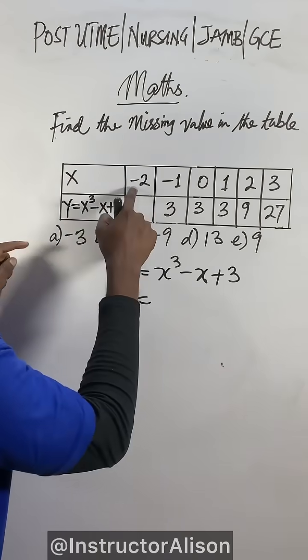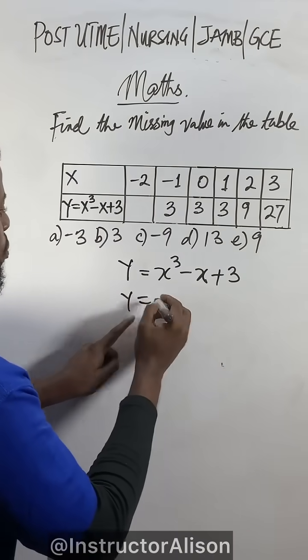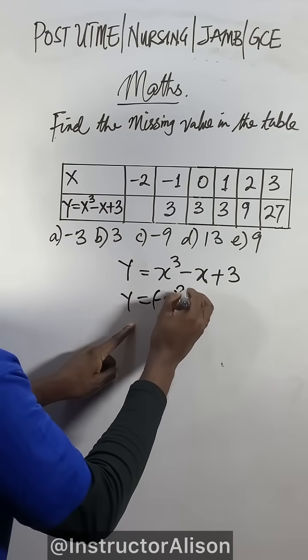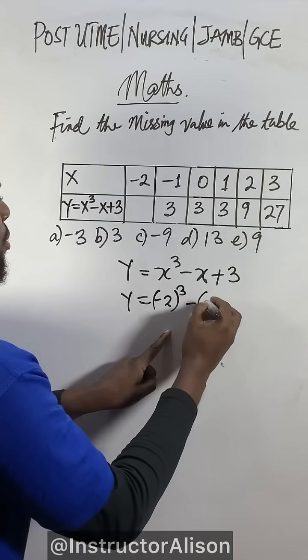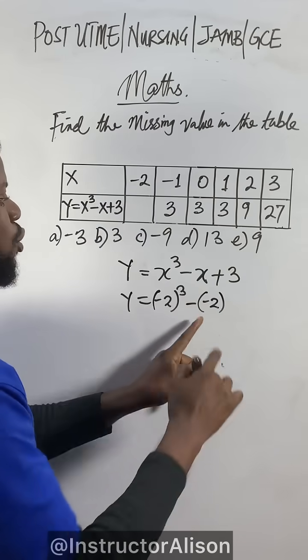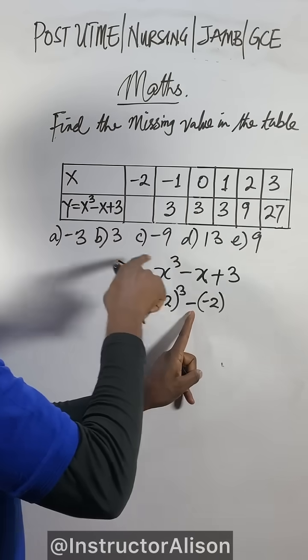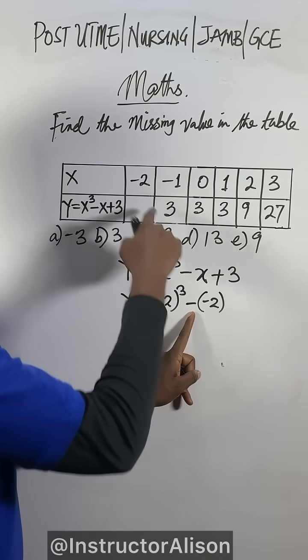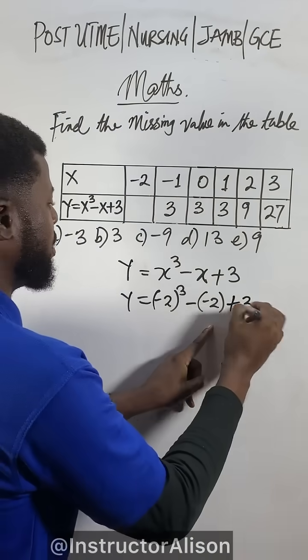So now x is -2. Wherever I see x, I will put -2. So -2 cube minus -2. See you have two negatives here. Don't put only 2, you must include the negative. Follow the equation, this will carry another negative from the bracket, plus 3.